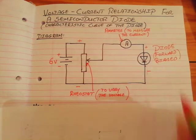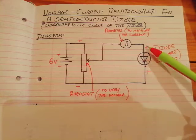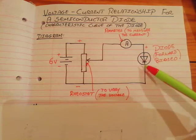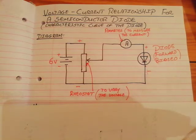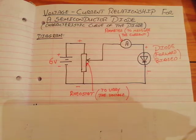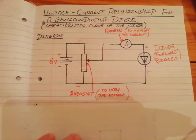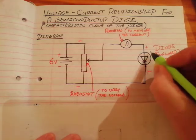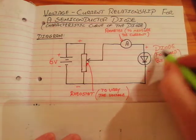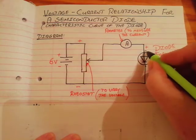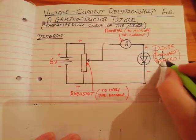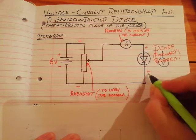Remember what forward biased means: this diode is connected up so it will allow a current to flow through it. We also want to know the voltage between the ends of the diode — the diode is forward biased, so we place the voltmeter here.